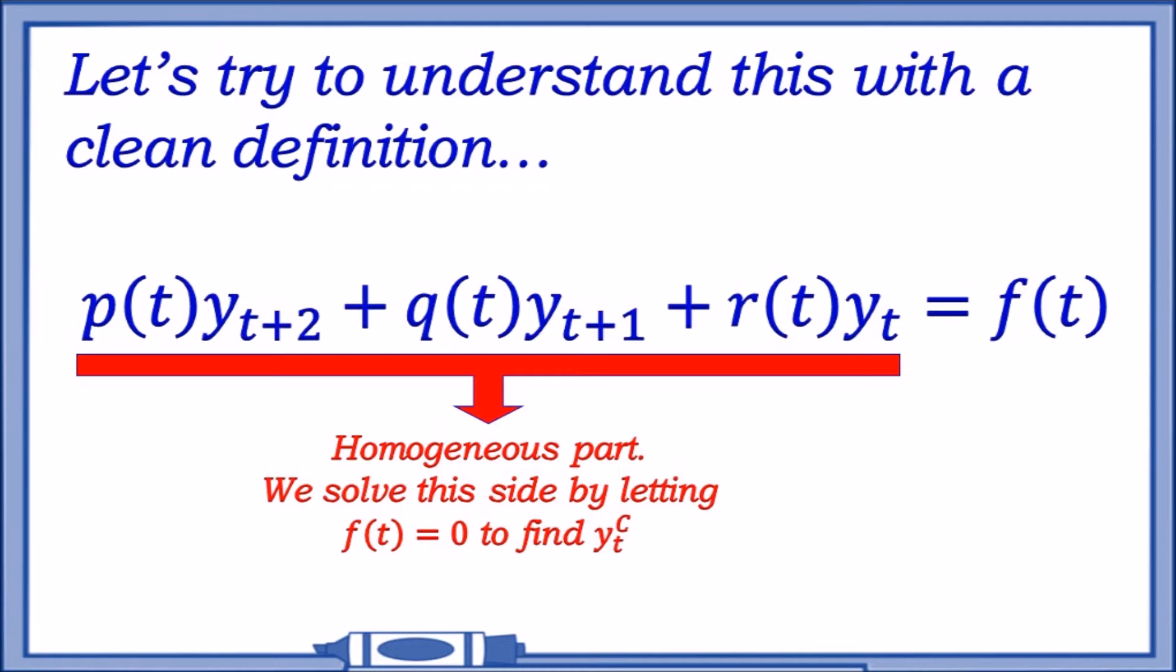It's homogeneous if we assume that the equation equals zero, and this is how we aim to solve one part of the solution which is known as the complementary solution. Of course, we also have the right-hand side which is the inhomogeneous part, and we'll get to this part a little later.